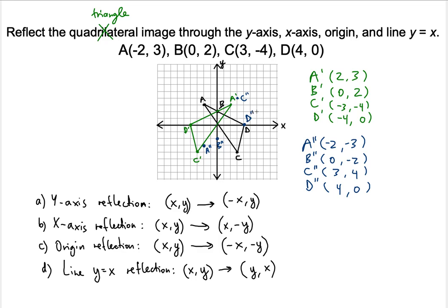So 4 comma 0 should be the point D double prime. Let's connect those and we should get a triangle. The black one is the original and this blue one is the reflection through the x-axis. You can definitely tell these two are mutual reflections through the x-axis. C is four units away from the x-axis and C double prime is also four units away. A double prime is three units away and the original A is also three units away. That is the x-axis reflection.